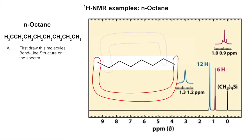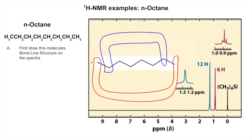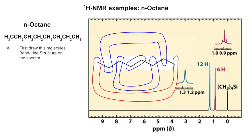First off, the two methyls on the ends are equivalent all the way across. Then the two methylenes one step in are equivalent, because this methylene has a methyl on one side and six carbons on the other side - and so does the other one on the opposite end. I bet you're guessing the next one correctly: those two methylenes are equivalent too. And finally the middle two are equivalent. So we have one, two, three, four groups of hydrogens for this molecule.